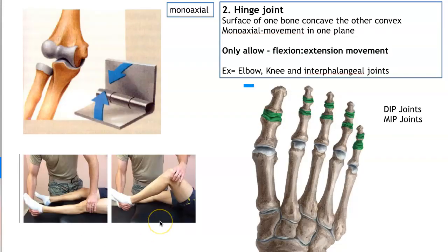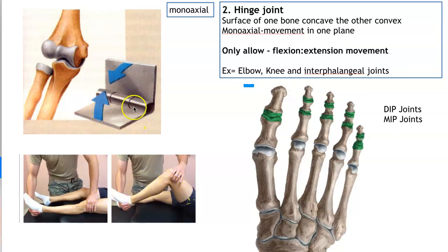Our second type of synovial joint is the hinge joint. It is mono-axial, only allowing movement in one plane — like the hinge on a door, it just opens and closes. The elbow is the classic hinge joint, simply flexing and extending. The knee also flexes and extends. These are the big hinge joints. The distal interphalangeal joints and the middle interphalangeal joints also only allow flexion and extension.